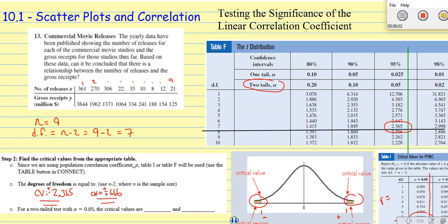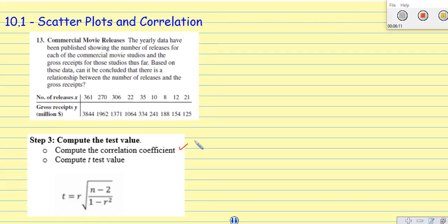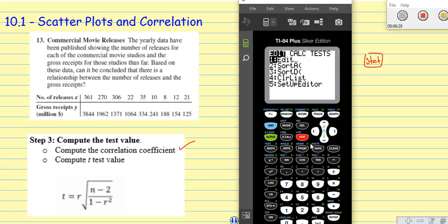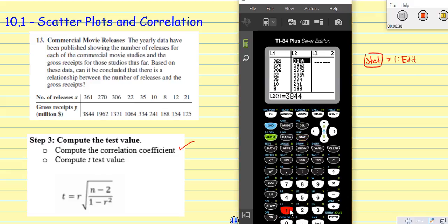Now let's compute our correlation coefficient because we need that if we're going to use table I or we need it if we're going to use the t-test. We're going to use our graphing calculator to do this. From your graphing calculator, you're going to press the stat key. We're going to choose number one, which is edit.